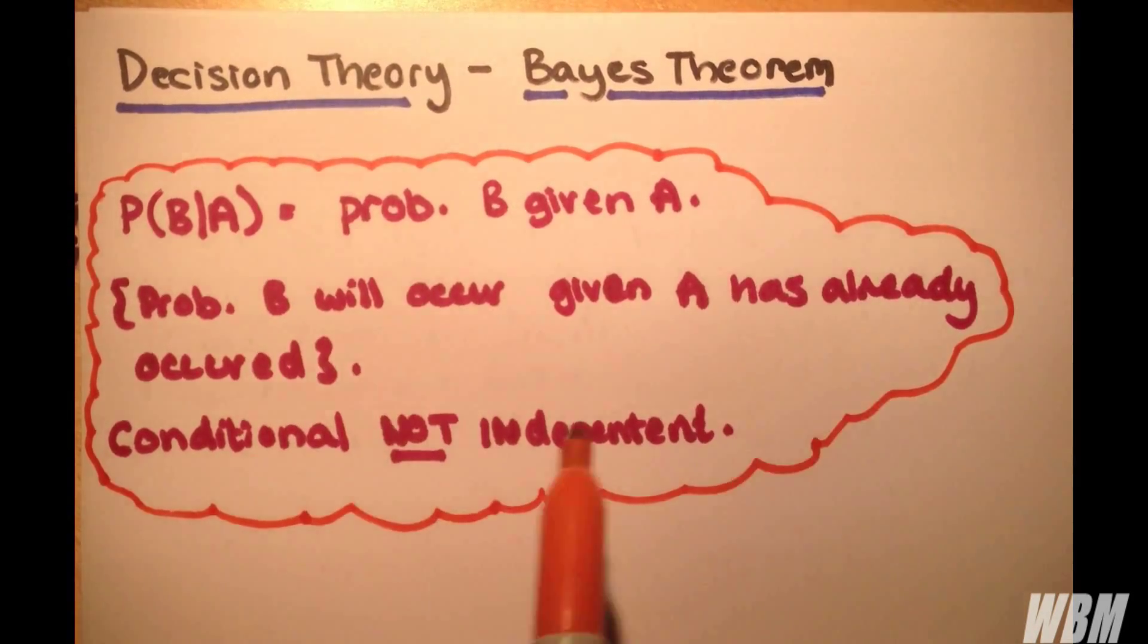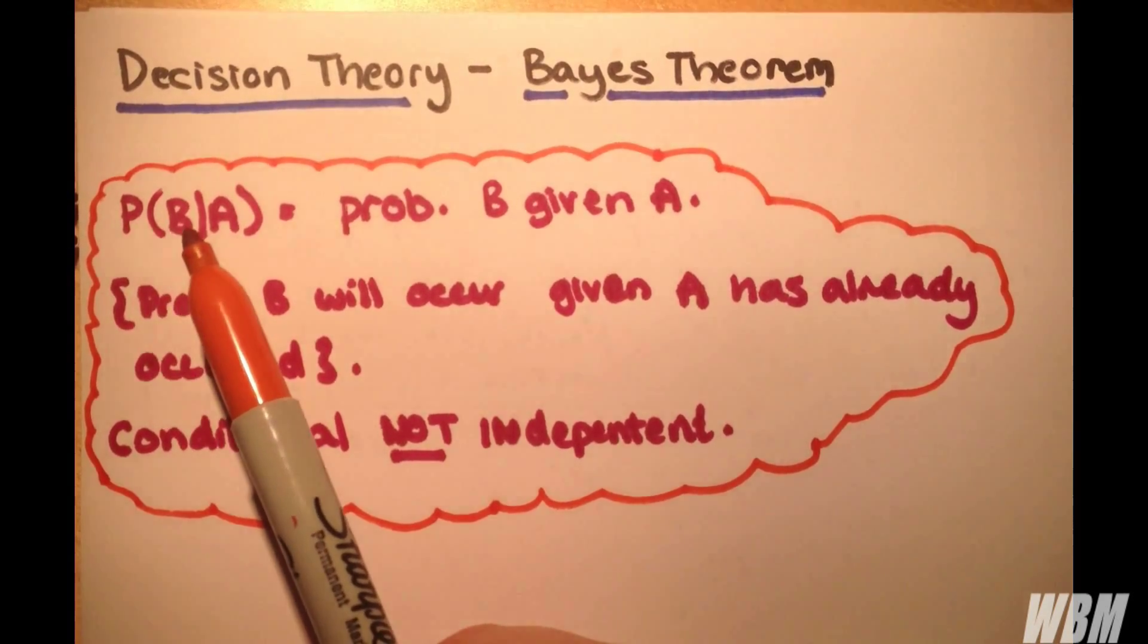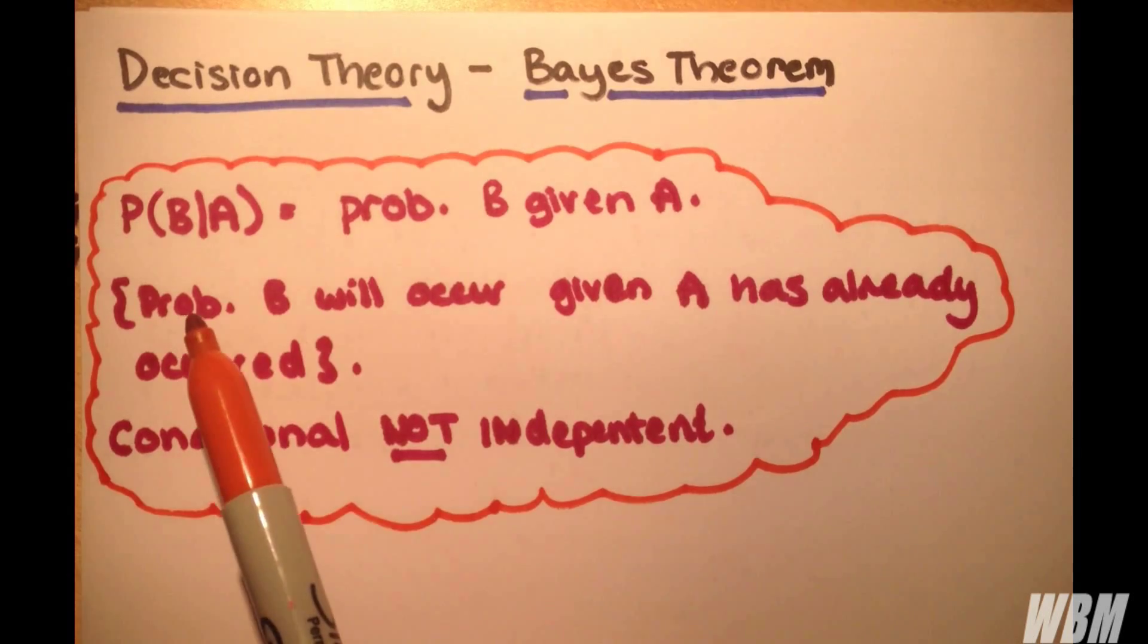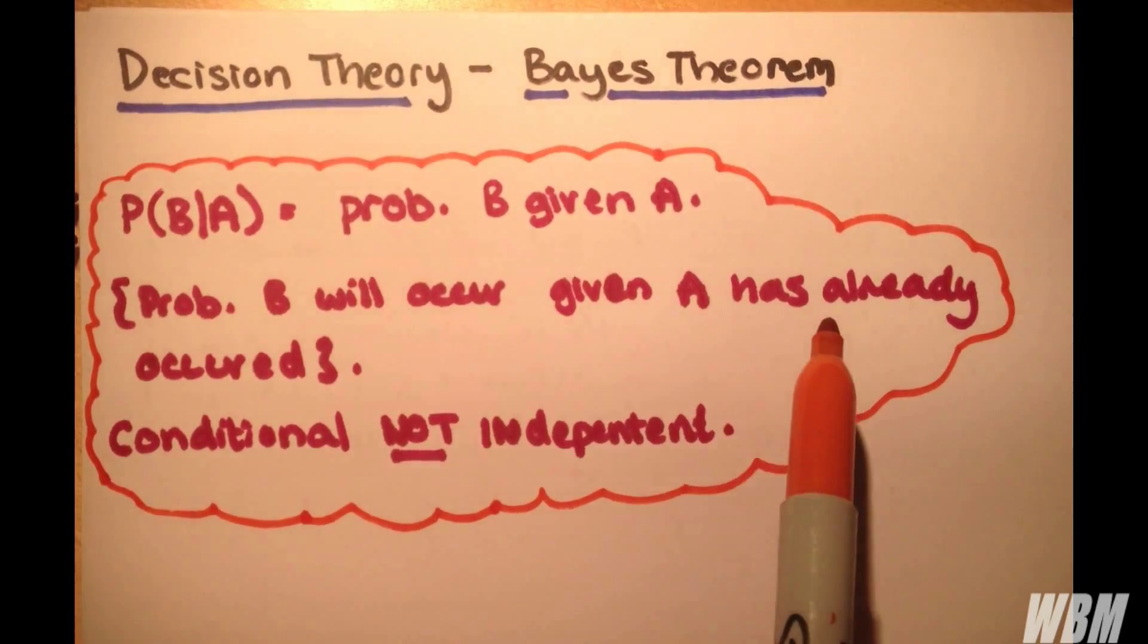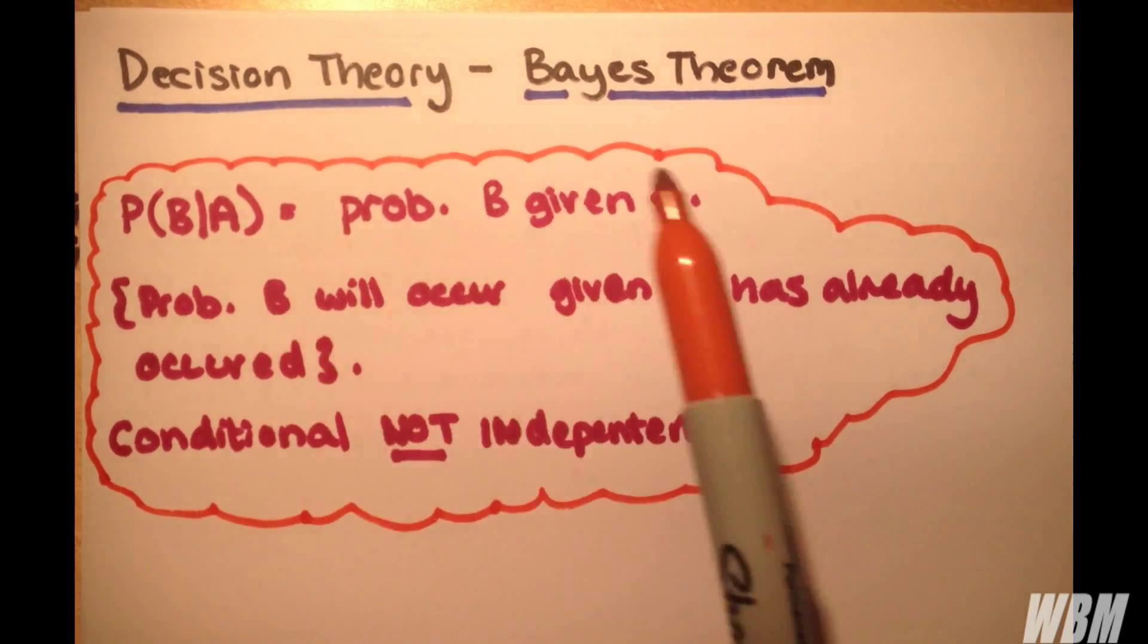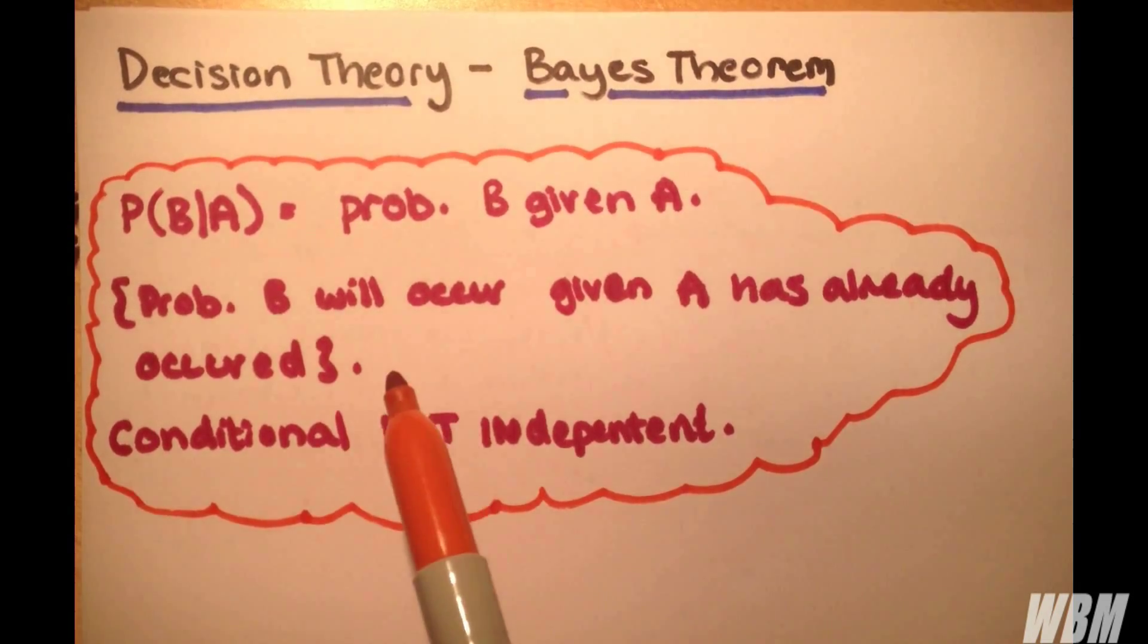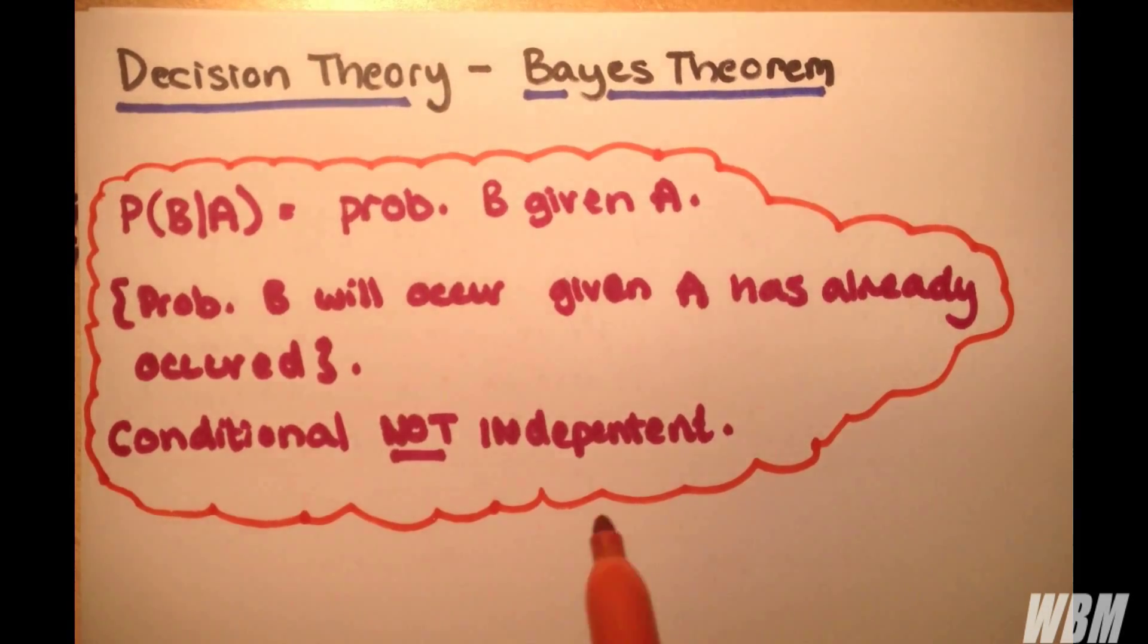Quickly, just to clarify this, this means probability of B given A, which means probability that B will occur given the knowledge that A has already occurred. This type of probability is conditional, not independent, which is very important because conditional probability means the separate events are affected by each other. Independent events are independent and much easier to work with.